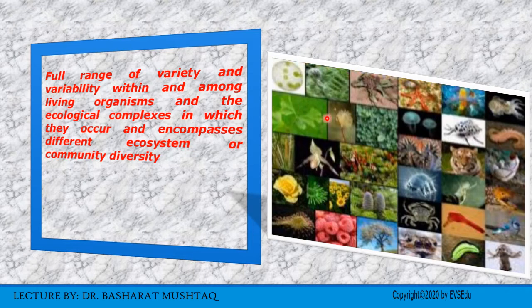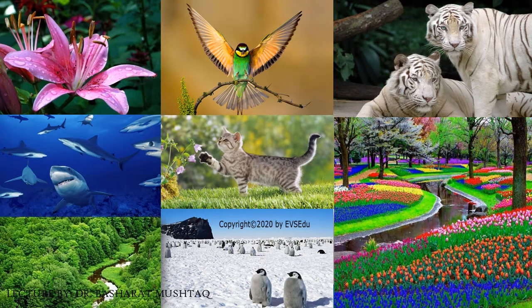You can take a look at this picture. Here are a number of organisms — different varieties within different ecosystems. These are various examples of diversity: plants, birds, animals, and so on, in different ecological complexes.